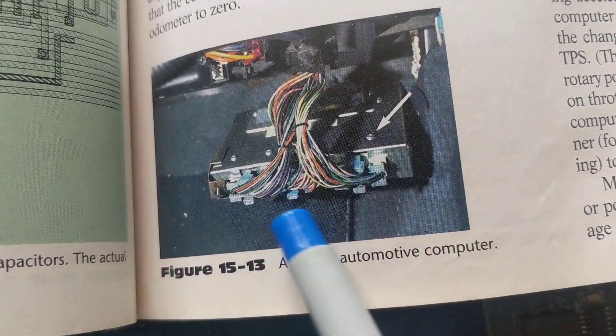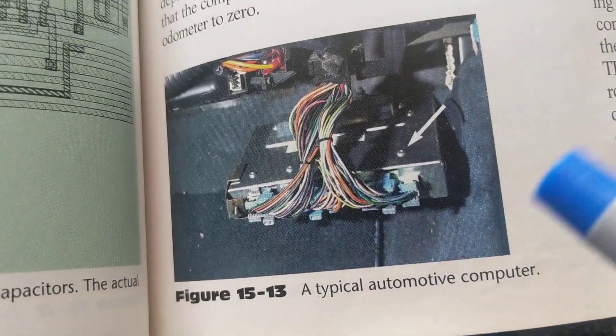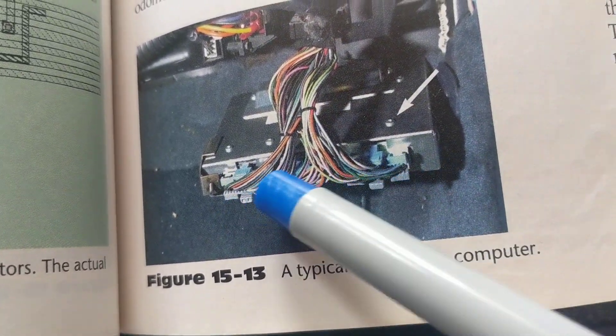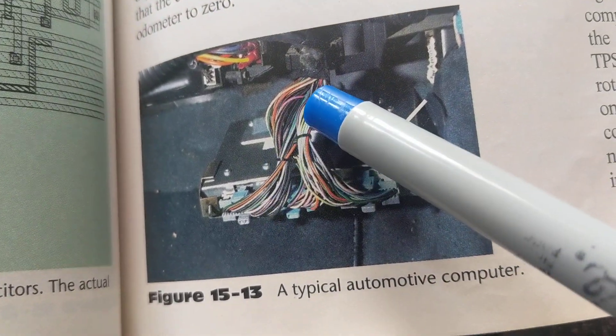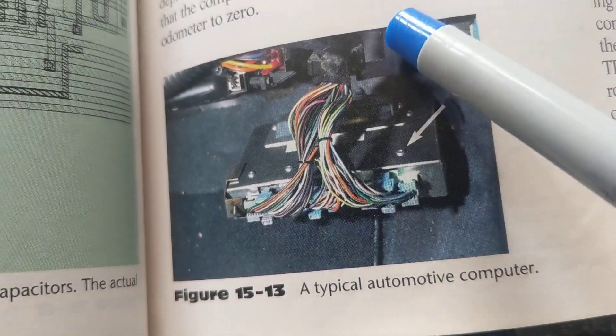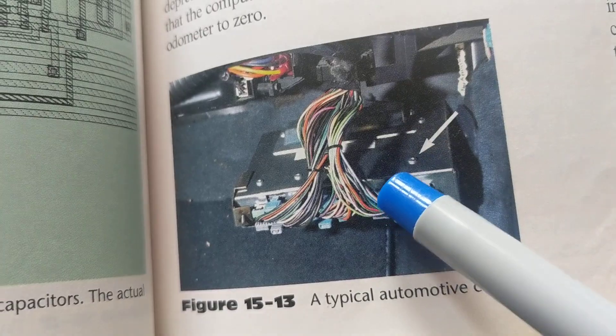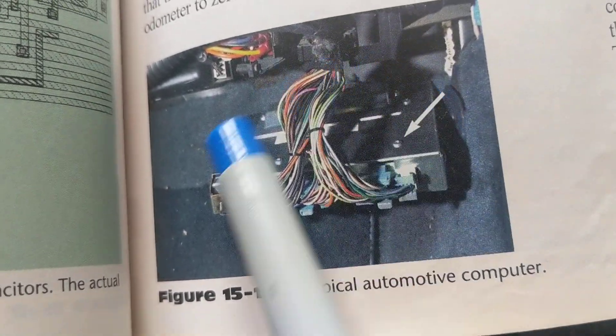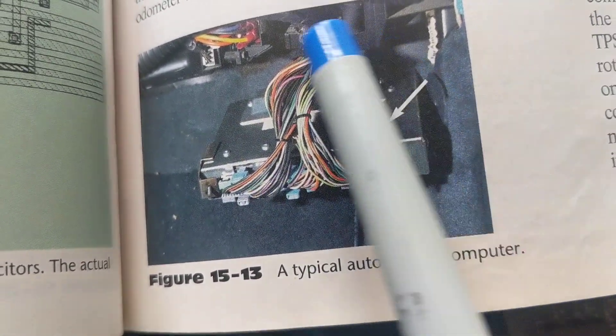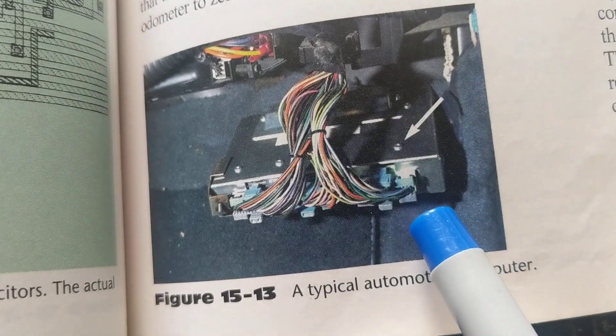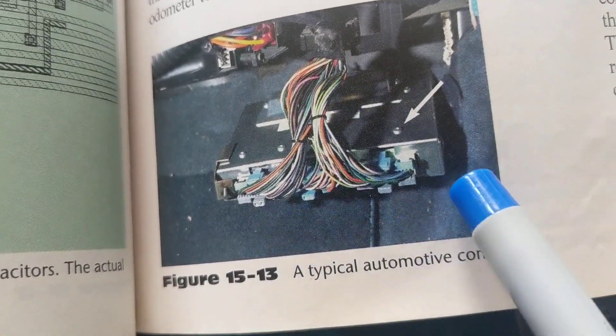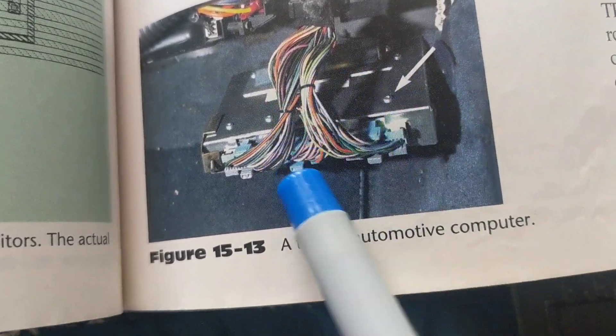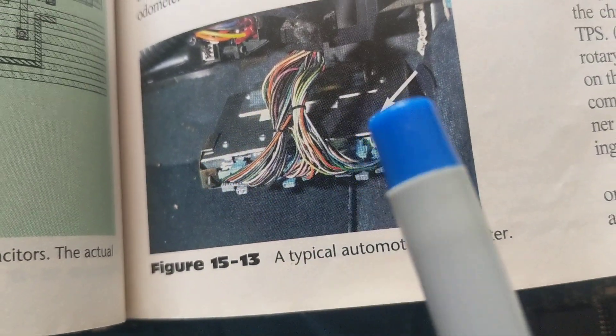All these wires from these connectors go back to the sensors or the proper systems that they need to. So this is an overall view of the outside, the external part of the ECU, the PCM. Regardless of make or model, this is usually what they look like.